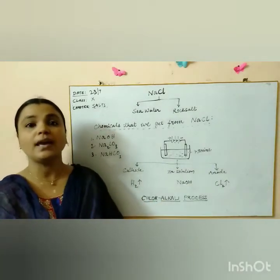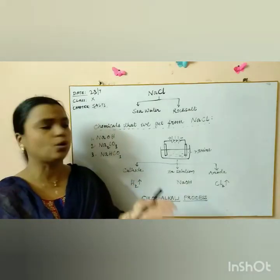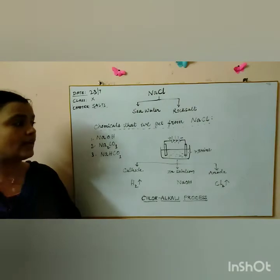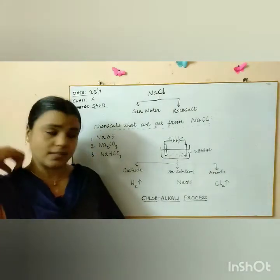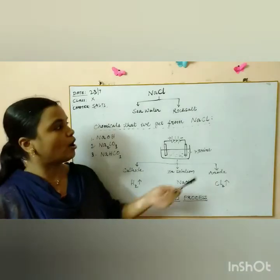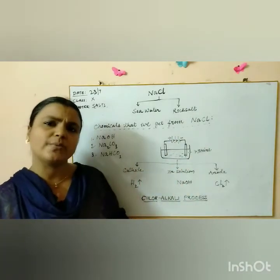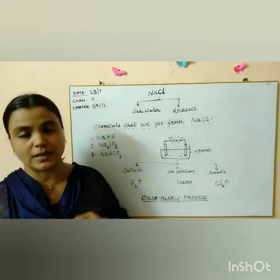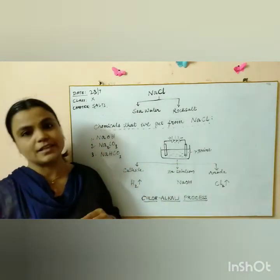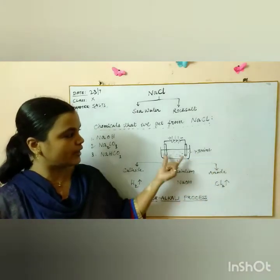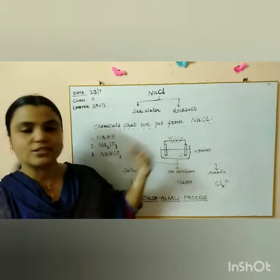So it is mainly produced by passing electricity through brine. Now what is brine? Brine is nothing but the concentrated aqueous solution of sodium chloride. What do you mean by aqueous solution? Nothing but the sodium chloride is dissolved in water here. The solvent is water here. So it is highly concentrated solution of sodium chloride that we take and we subject it to electricity.